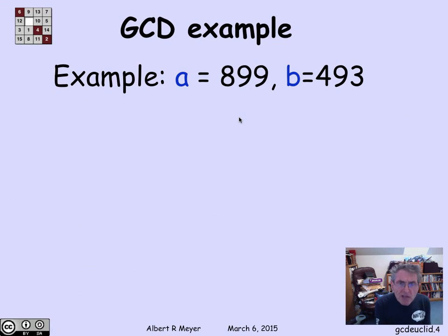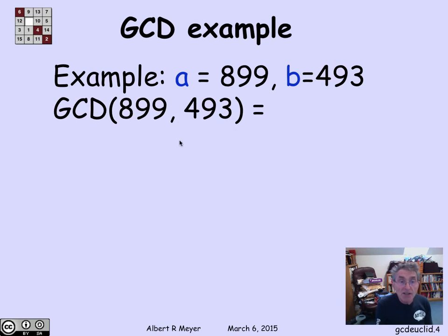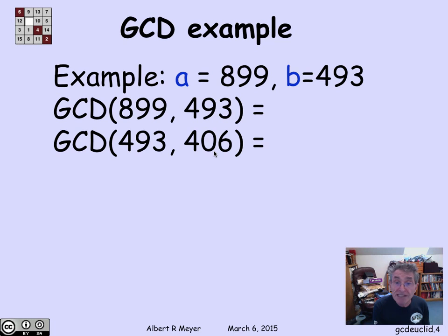The remainder lemma gives us a very lovely way to compute the GCD. Here's an example. Suppose I want to compute the GCD of 899 and 493. According to the remainder lemma, if I divide 899 by 493, I get a quotient of 1 and a remainder of 406.